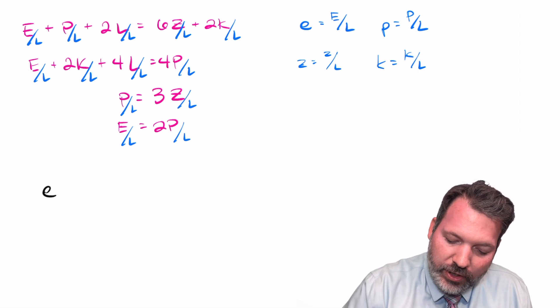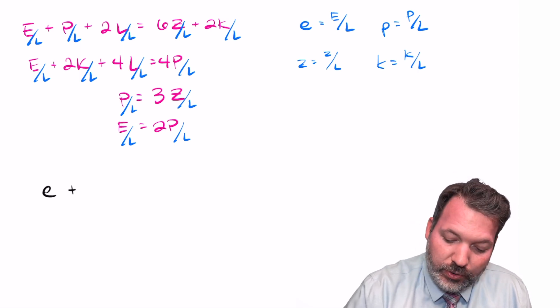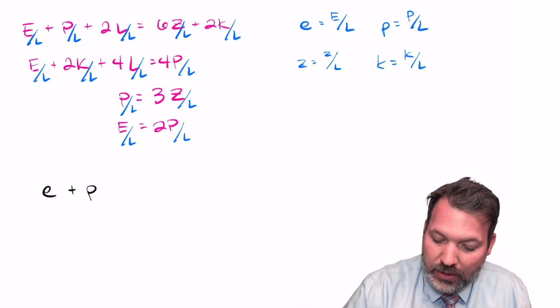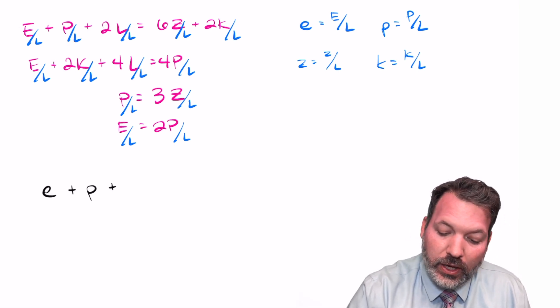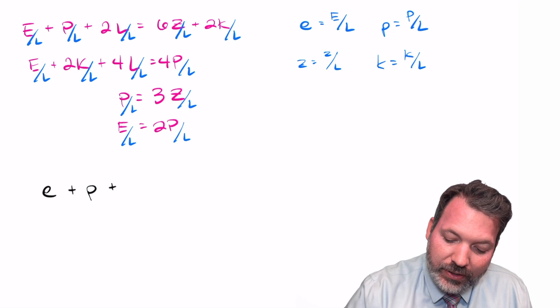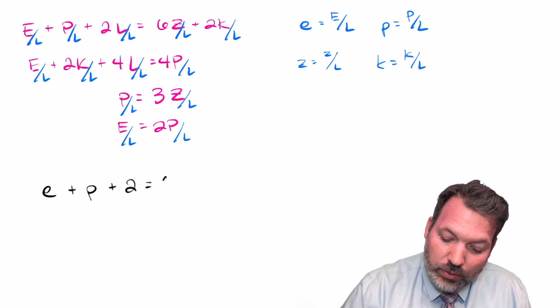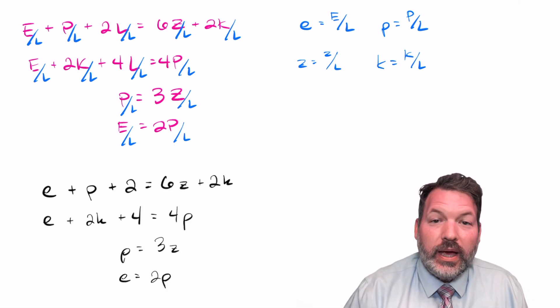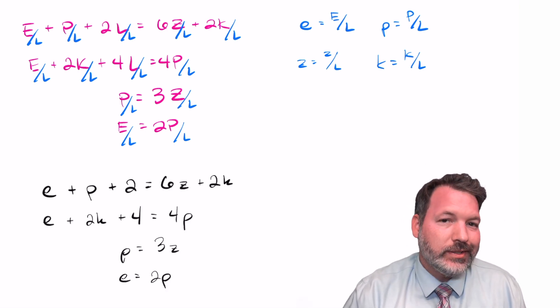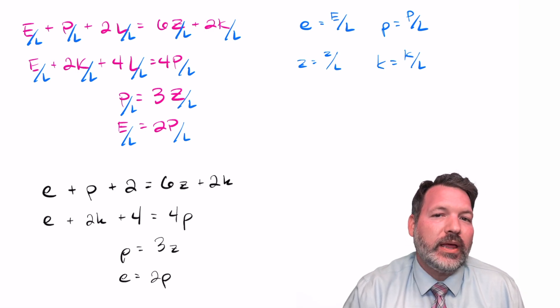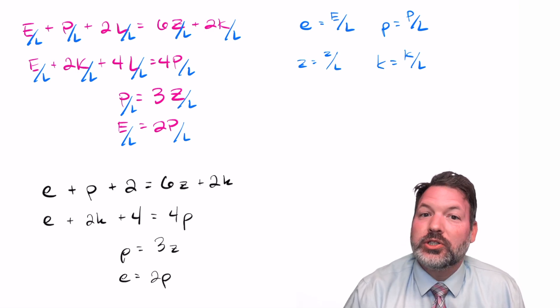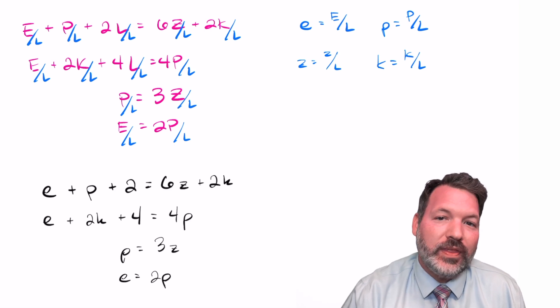So first of all, we can rewrite our equations slightly with these new variables. For the most part, they look the same. E plus p for the elephant and the polar bear in the first equation. But now instead of 2L, it's just going to be plus 2. And that whole thing is equal to 6 little z plus 2 little k. As we finish out the remainder of our equations, it might not seem like we've gained much of anything. But I'm going to manipulate these just a little bit more. And I'm going to show you what we will gain at this level of abstraction.